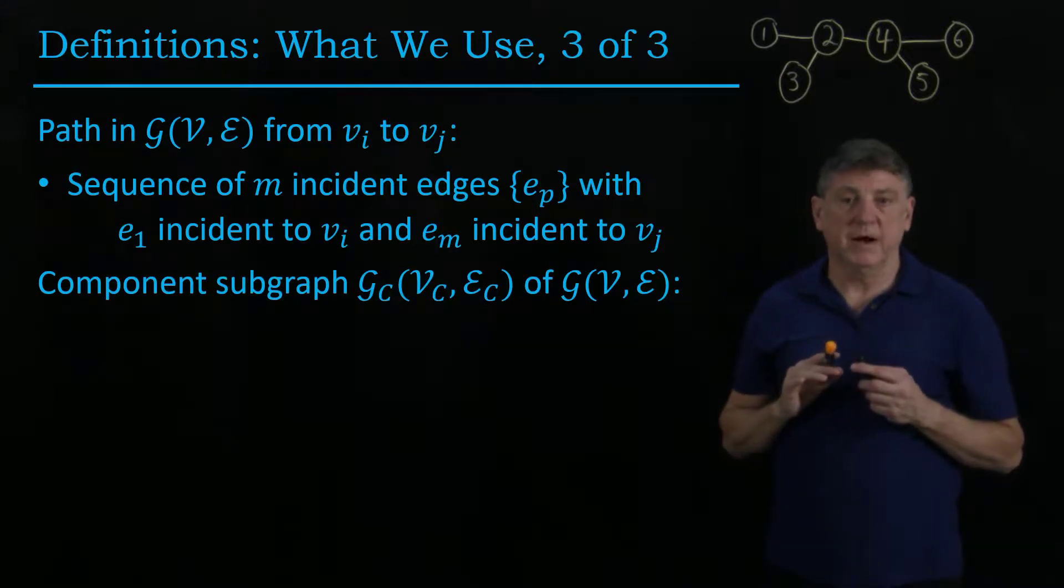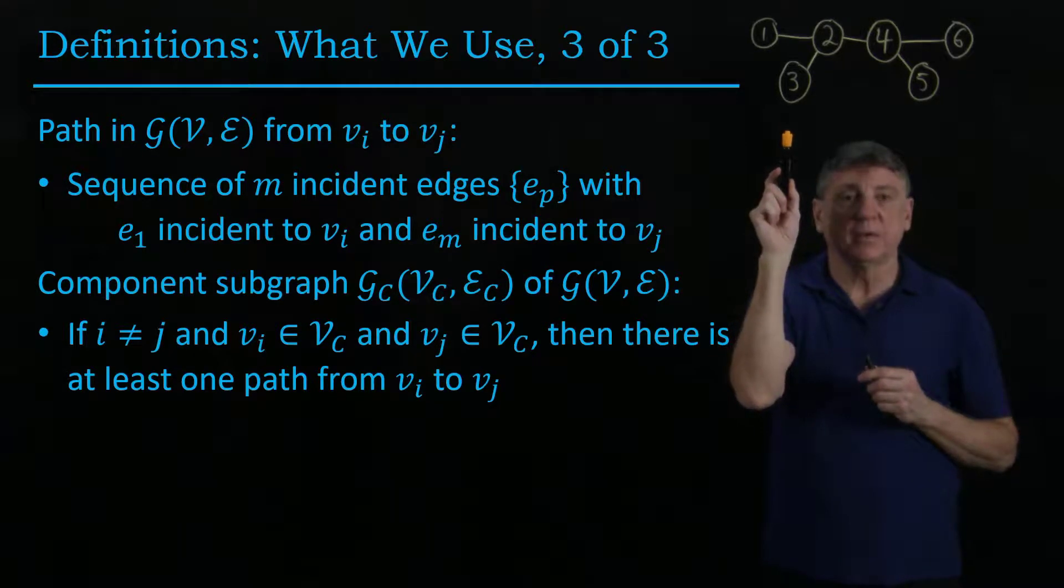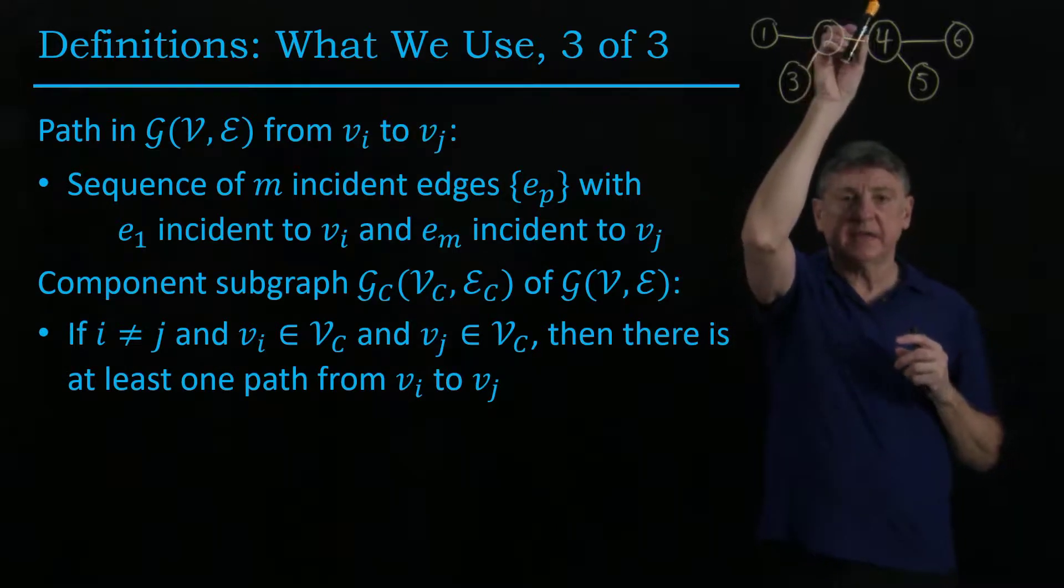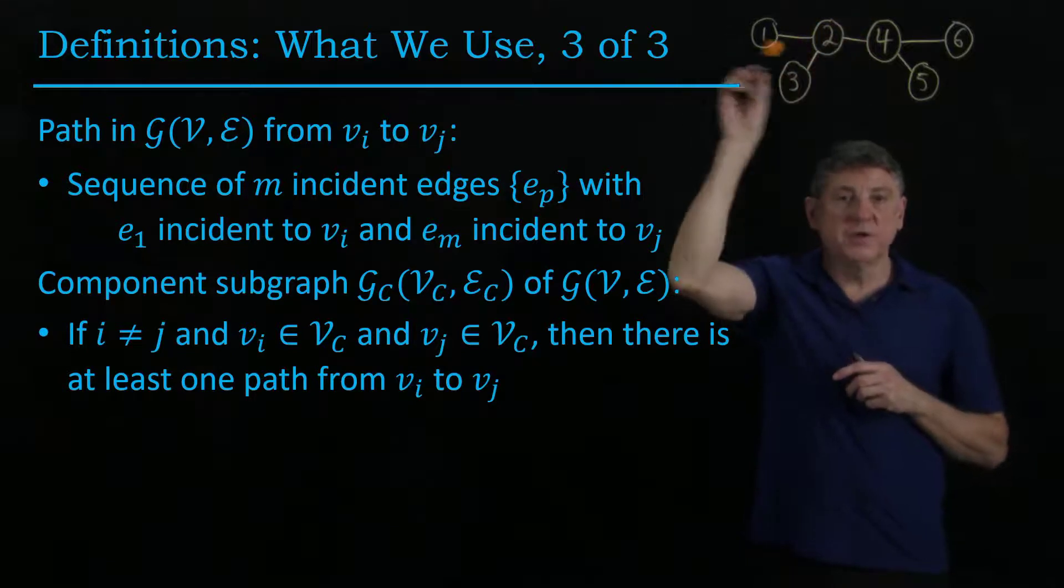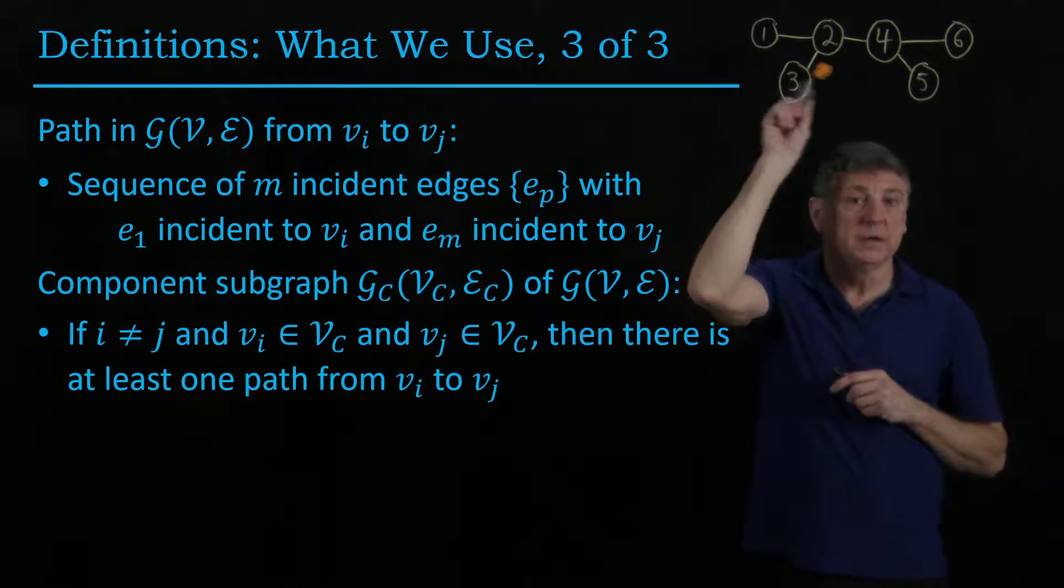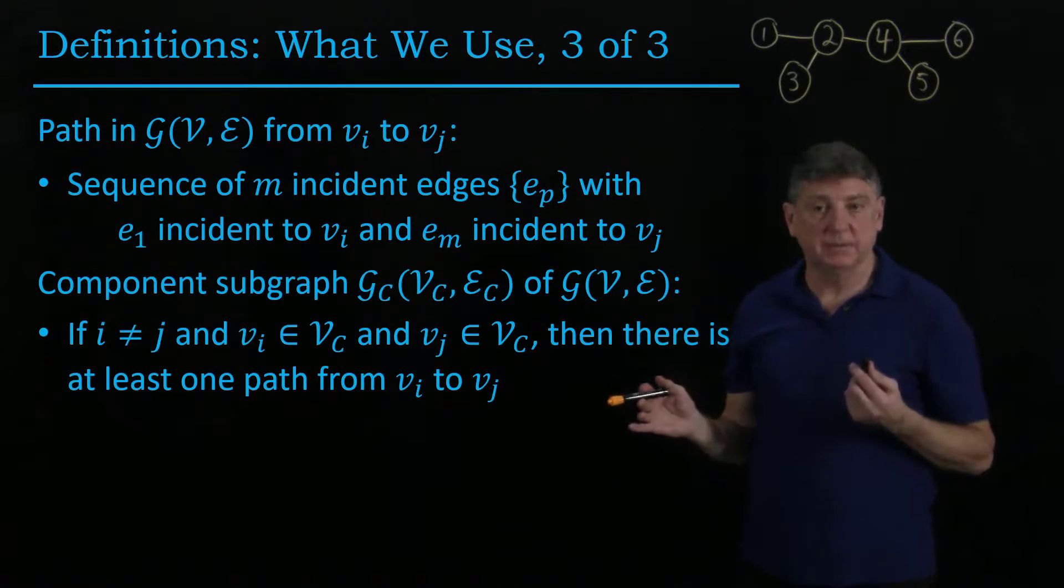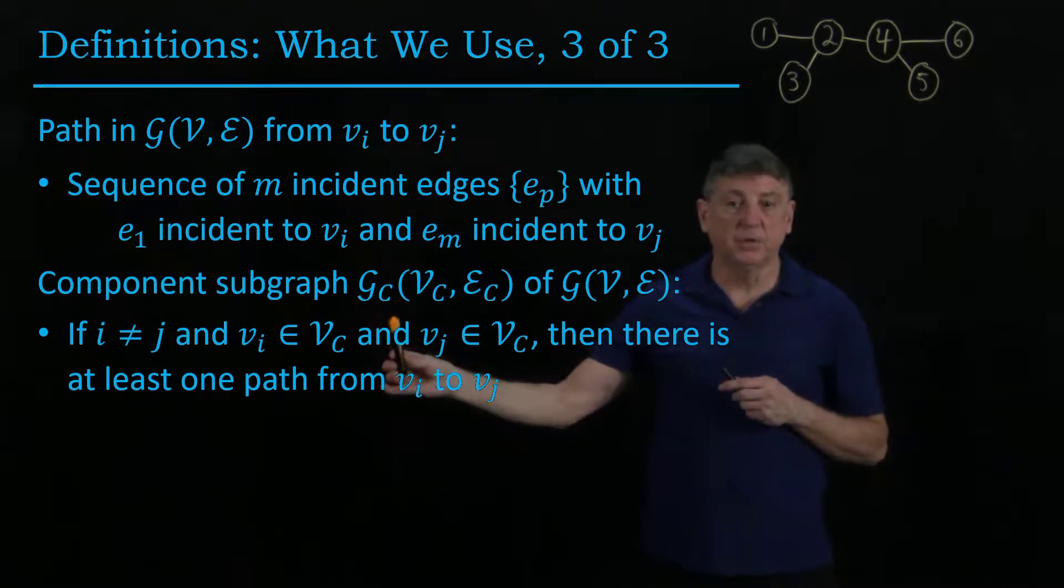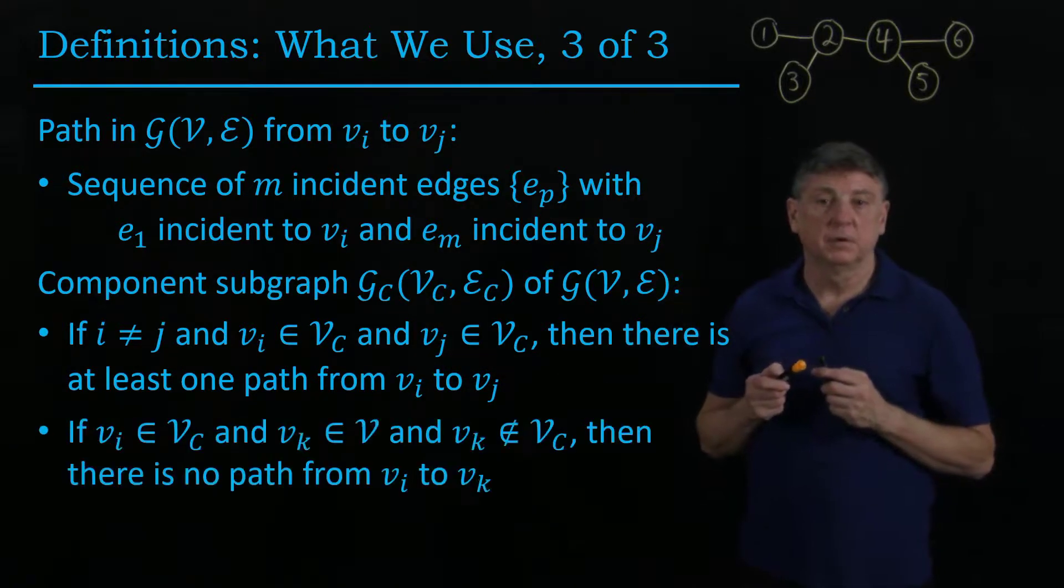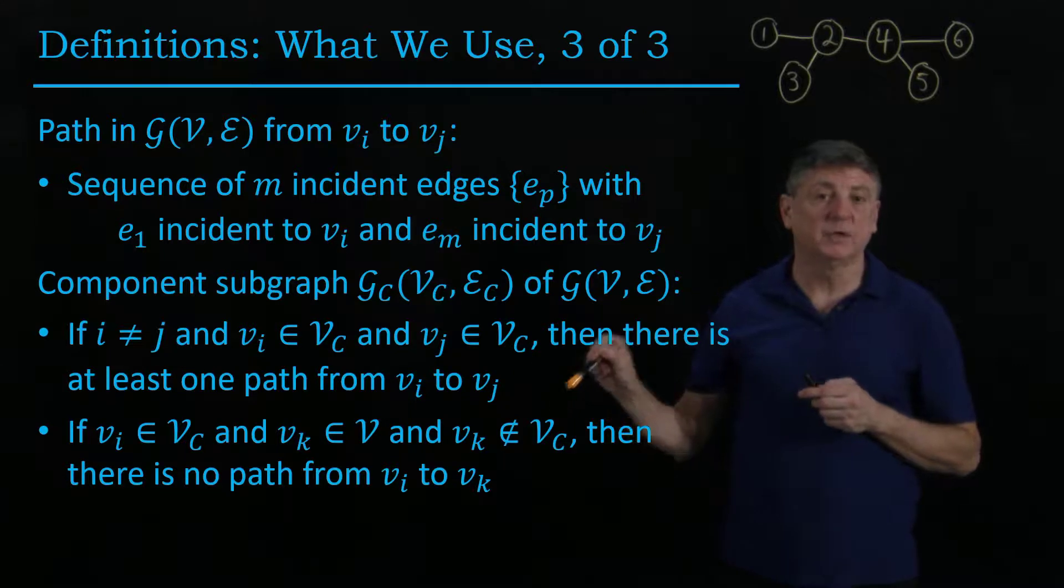A component subgraph is an important concept, and that is that we will sometimes want to say that a graph has multiple components. So for example, in this graph, if we were to erase this edge between 2 and 4, then we would have 1 2 3 being a subgraph, 4 5 6 being a subgraph, and there would be no path that goes from 1 to 5 if we eliminate this edge. And this definition is a formalization of that simple concept, and that is that it's a component graph means that if two vertices are in the component, then there's at least one path from the first vertex to the second, and the other is that if you pick a vertex that isn't in that component, then there's no path.